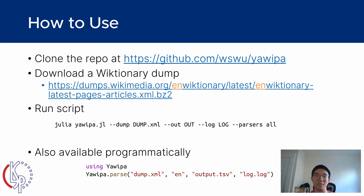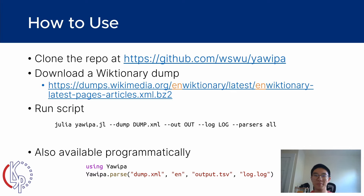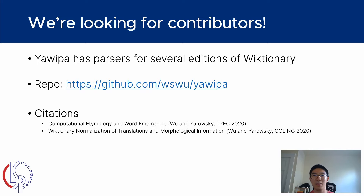Yawapa is very easy to use. Just clone our repo, download the Wiktionary dump of the edition you want, and then run the script. Wait a little while, and then out comes a .tsv file. You can also run it programmatically, as shown here.